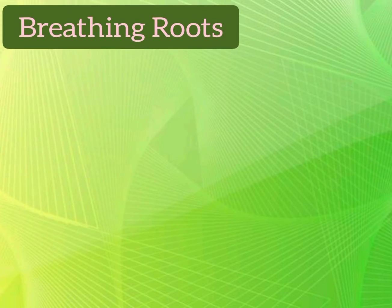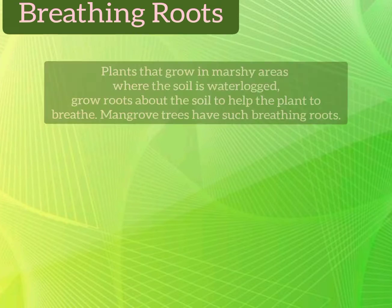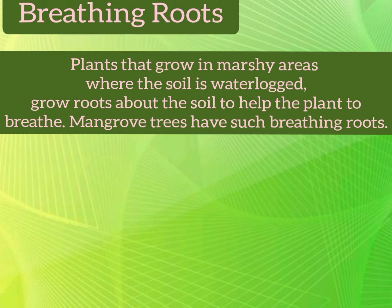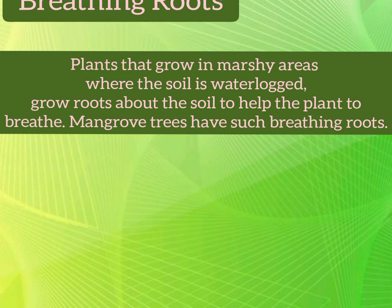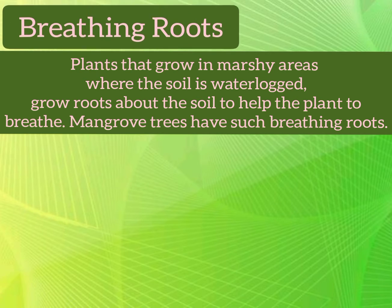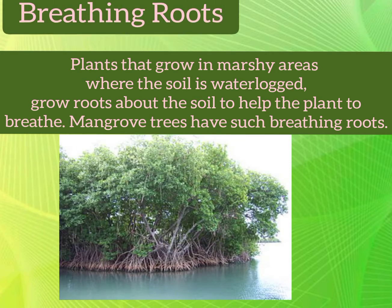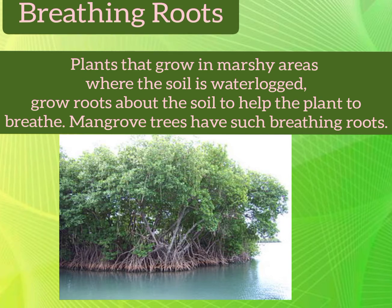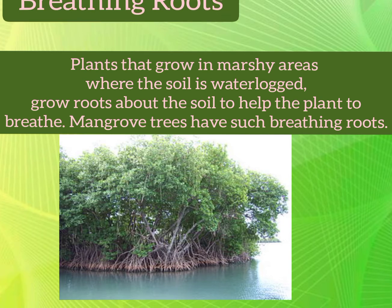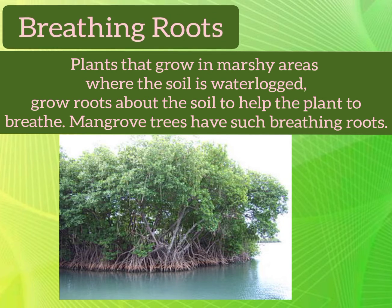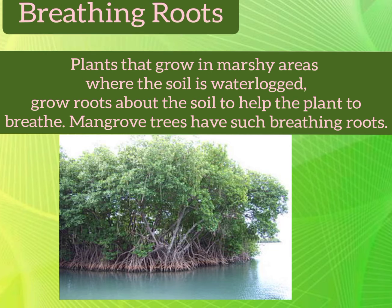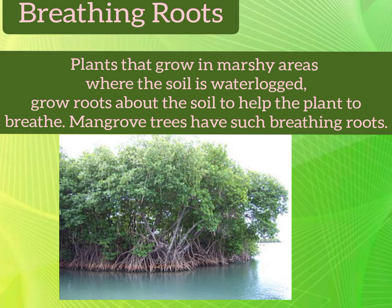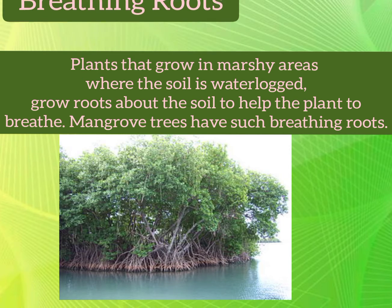Next is breathing roots. Some plants that grow in marshy areas where the soil is waterlogged grow roots above the soil to help the plant to breathe. For example, mangrove trees have such breathing roots.